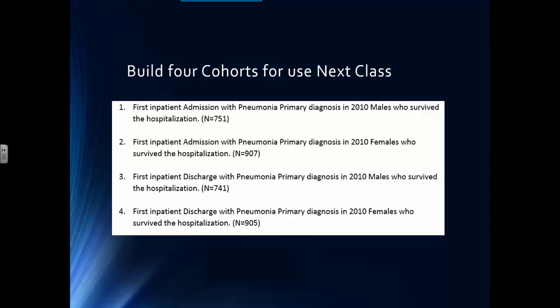These are the four cohorts we are going to build in preparation of our next class. They include pneumonia patients for whom pneumonia is the primary diagnosis. In 2010, we're going to look at cohorts of males and cohorts of females, where the index event is an admission or the index event is a discharge.